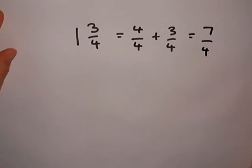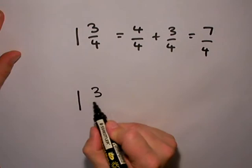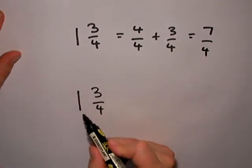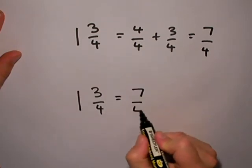We don't always think of it like that, and we don't always write this bit out here. So if I've got 1 and 3 quarters, I think to myself here, I've got 4 quarters there plus those 3, which gives me 7 quarters altogether.